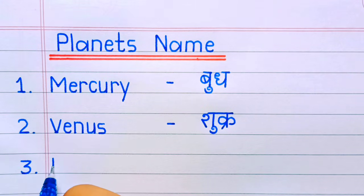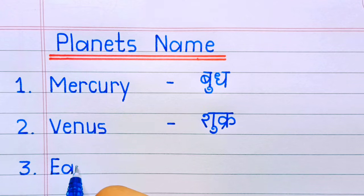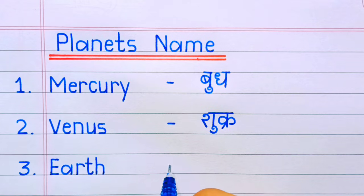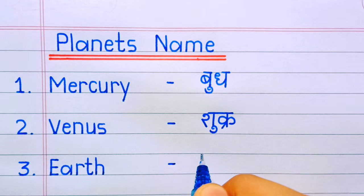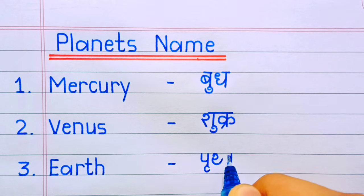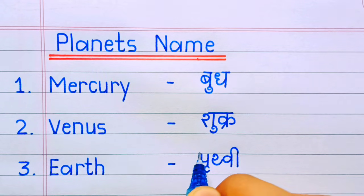Number three: Earth. E-A-R-T-H, Earth. Earth means Prithvi.